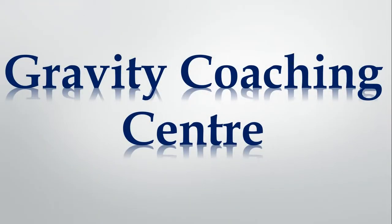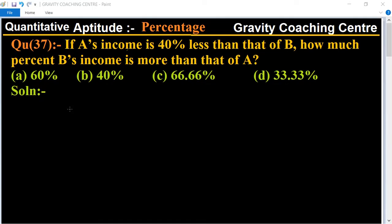Welcome to our channel Gravity Coaching Centre. Quantitative Aptitude, chapter Percentage, question number 37. If A's income is 40% less than that of B, how much percent is B's income more than that of A?